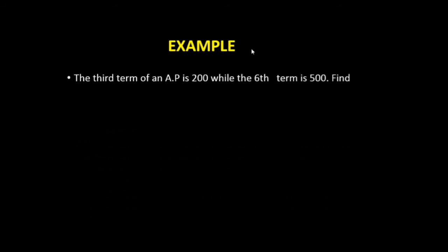The question says: the third term of an AP is 200 while the sixth term is 500. Find: (a) the common difference, (b) the first term, and (c) the tenth term.